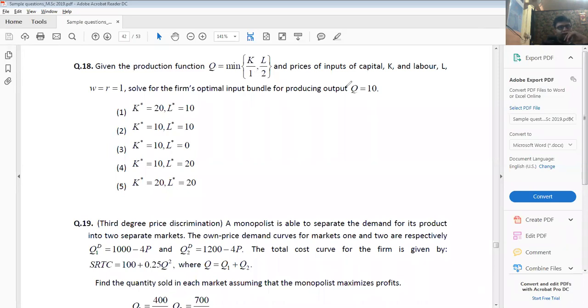If I have to produce Q equals 10, basically 10 equals min of K by 1, L by 2. Now both have to be the same - it's a min function. So 10 equals K by 1 equals L by 2. So K is 10, L is 20. Answer is 4.